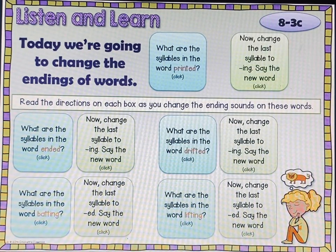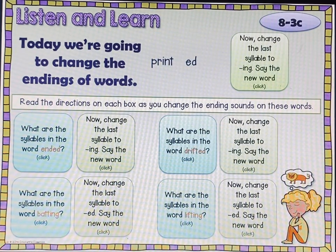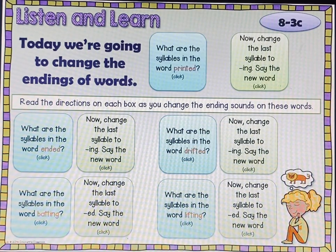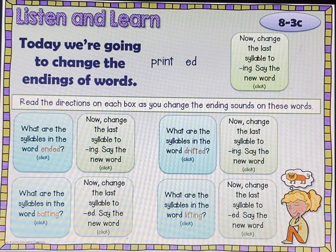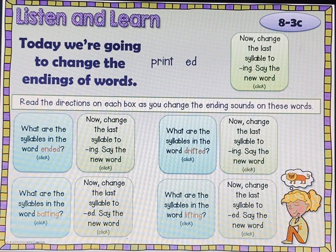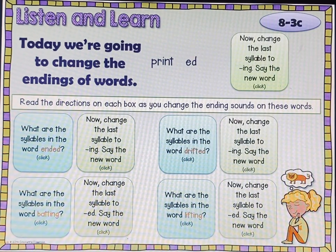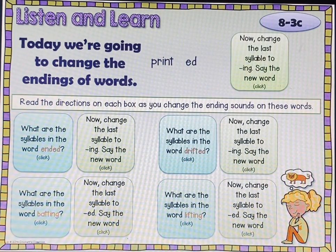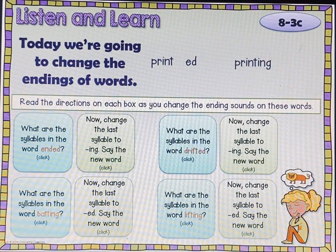Let's listen and learn. Today we're going to change the ending of words. What are the syllables in the word 'printed'? The syllables in the word printed would be 'print' and then 'ed,' so you would divide it there. This little exercise is going to help you when you take tests because there's always a section where it says where do you divide the word. Change the last syllable to 'ing' and say the new word — 'printed' becomes 'printing.'